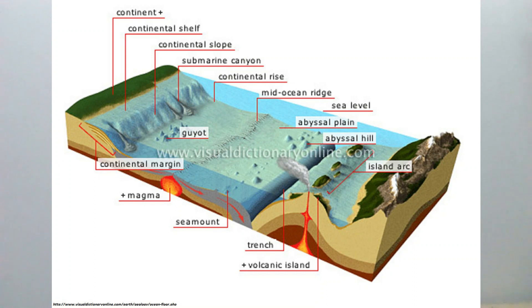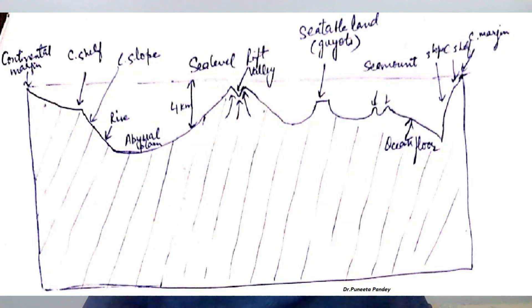This figure shows all the morphological features present — the configuration of the ocean floor — starting from the continental margin where we have the continental shelf, followed by continental slopes, then continental rise, abyssal plains. Besides that, some other features such as rift valley, guyots, and seamounts can also be seen in this figure. Let's study them in detail now.